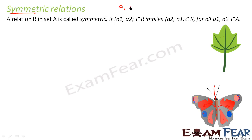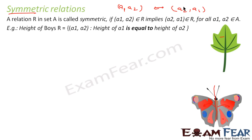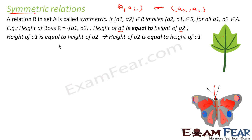As the name implies, if a1-a2 relation is holding true, that means a2-a1 relation should also hold true. For example, when I say the height of boys in the class: if height of a1 is equal to height of a2, this implies height of a2 is equal to height of a1.